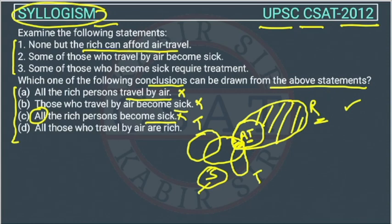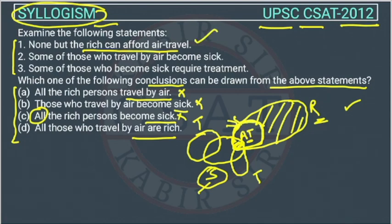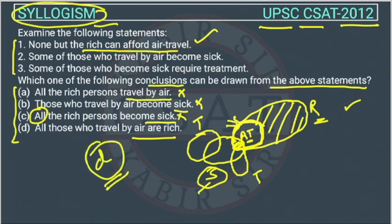Now the last conclusion, D: all those who travel by air are rich. Looking at the diagram, the air travel circle is inside the Venn diagram of rich. So all who travel by air are rich — this is correct, and it is essentially the first statement itself. Therefore, the answer to this question is option D.